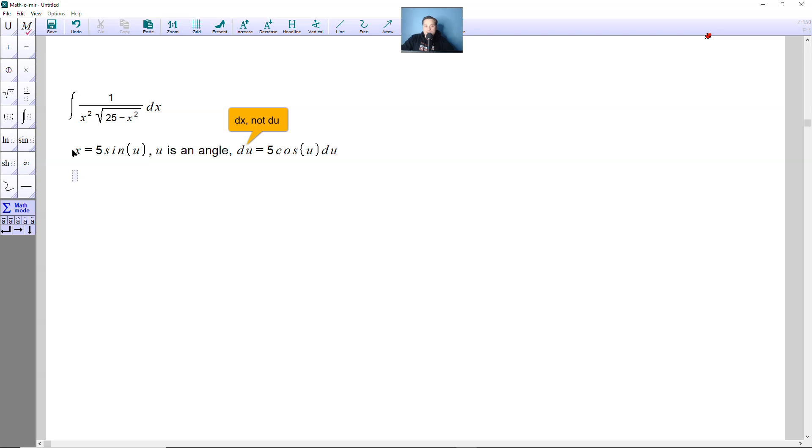Now what you can do is rewrite the square root of the integrand, that part, as follows. You can type square root and then 25 minus 5 sine u and the whole thing is squared.